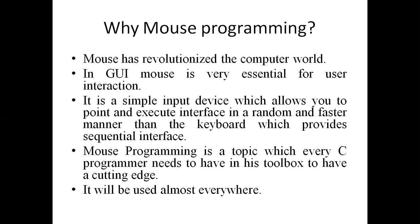The mouse is a simple input device which allows you to point and execute interface in a random and faster manner than the keyboard, which provides only sequential interface. The user feels troubled while working on the keyboard because the mouse has become very handy — it is easy to switch from one place to another by shifting the mouse, and easy to select an item on the graphical user interface. That is why mouse programming is a topic every C programmer needs in his toolbox.